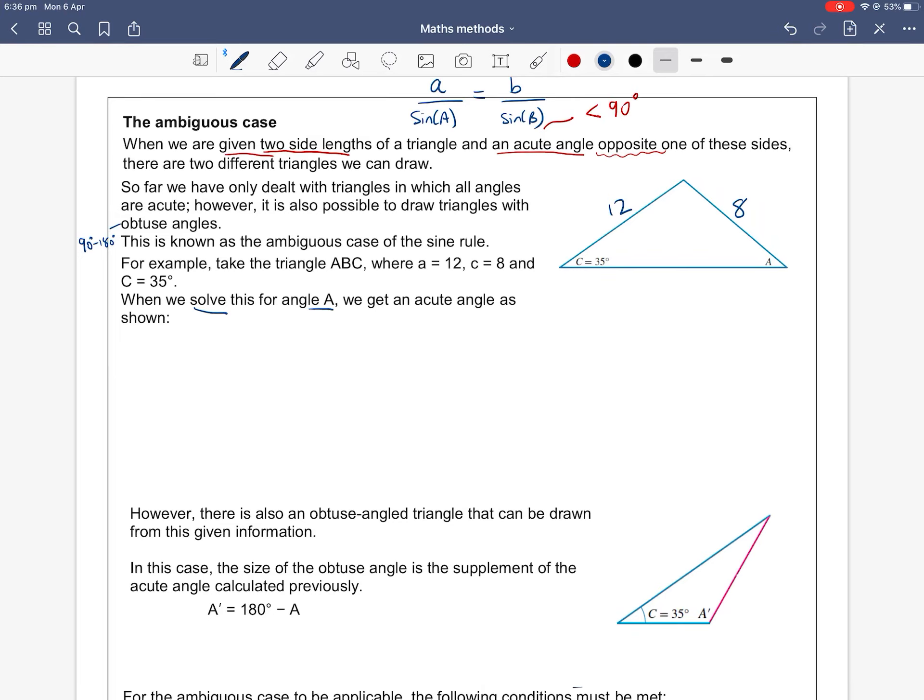So let's solve for the unknown angle A using sine rule. A over sine A equals B over sine B. So 12 over sine A equals 8 over sine 35 degrees. I'm going to cross multiply. So 8 sine A equals 12 sine 35 degrees. So sine of A is 12 sine 35 degrees divided by 8. And so A is sine inverse of that fraction.